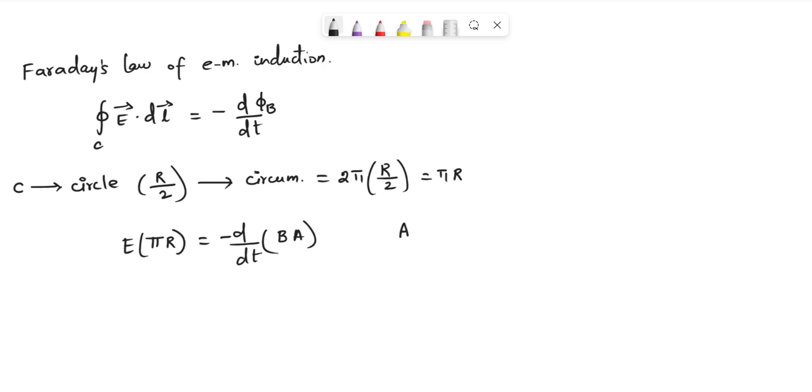Here, the area inside the closed path can be written as pi times r over 2 the whole square, which can also be written as pi r square over 4.